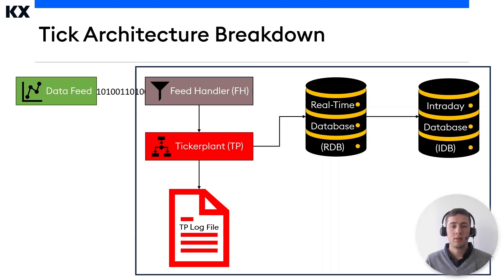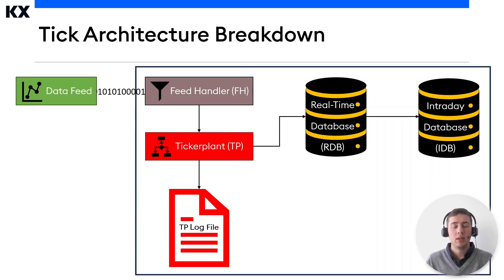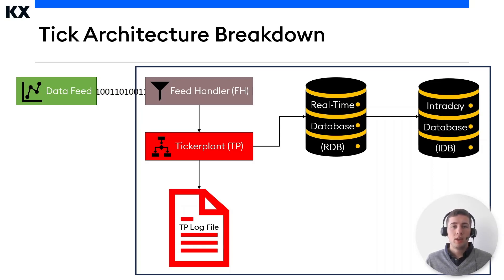And this is where the intraday database comes in. An intraday database is a way of storing data which is not needed for queries on disk while waiting for the end-of-day action to occur. Generally, real-time data which is less than a certain time threshold will be stored in the RDB, and then any older intraday data will be written to disk in the intraday database. This time threshold is customizable, so it could be 1 minute, 15 minutes, or even a few hours. At the end of the day, remaining data in the RDB is flushed to the IDB. The data is then sorted on disk, and then this data is moved to the appropriate date partition within the historical database.